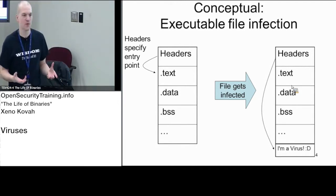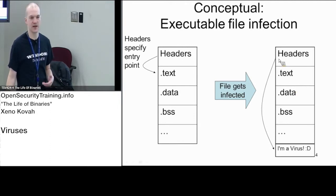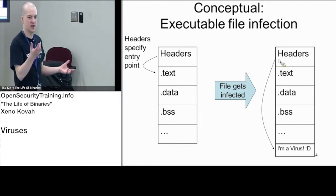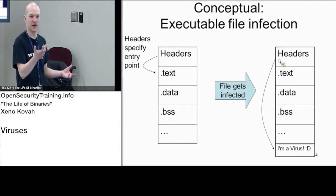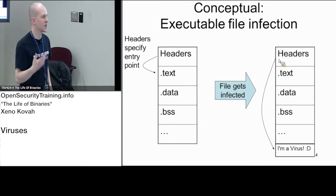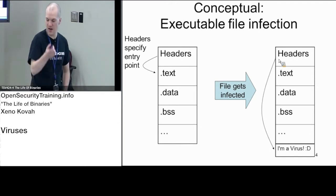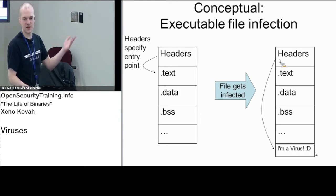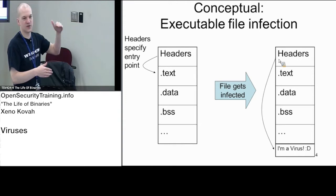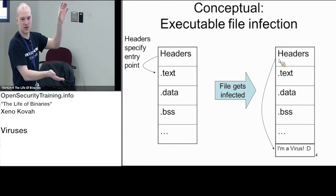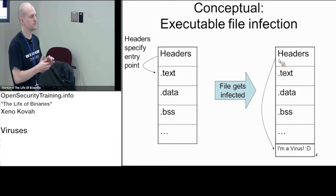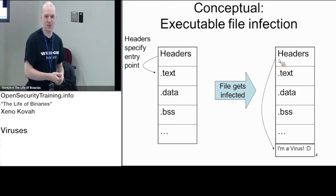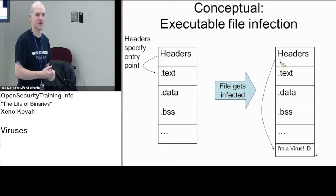There are different ways the virus will subsequently get invocation. The simplest way is when it tacks itself to the end of the file, it changes the address of entry point field in the optional header in the PE context to just point down at its code at the bottom. That looks pretty suspicious — you've got an address of entry point which doesn't point at the normal dot text section; it might point somewhere with no section defined, or maybe the resources section, as you'll see with the virus today. The virus today will take whatever the last section is, expand the size in the section header, and tack itself down there at the bottom.